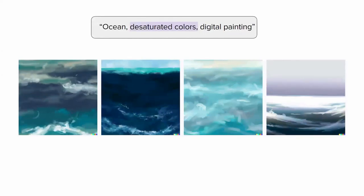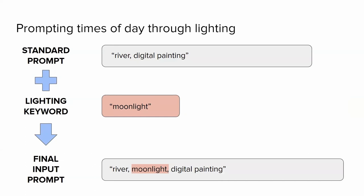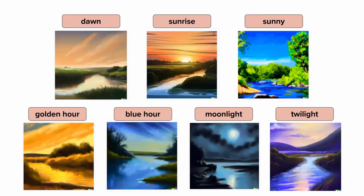Within the animation workflow, these prompting techniques could aid artists in quickly brainstorming and comparing factors affecting mood for specific scenes. Similarly, lighting keywords can showcase scenes at different times of day. Using a base prompt of 'river, digital painting,' adding keywords like dawn, sunrise, sunny for midday, golden hour, blue hour, moonlight, and twilight can showcase a full progression of light throughout the day at the same location.